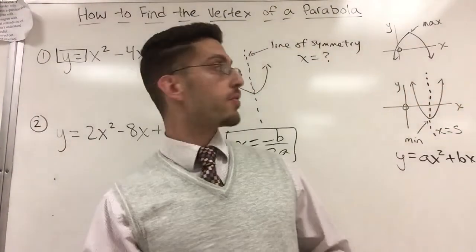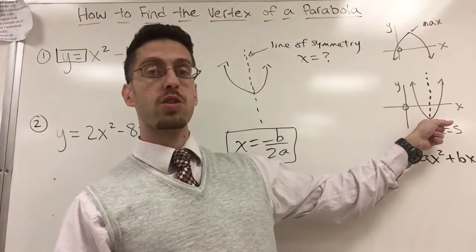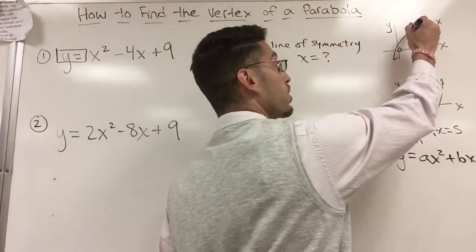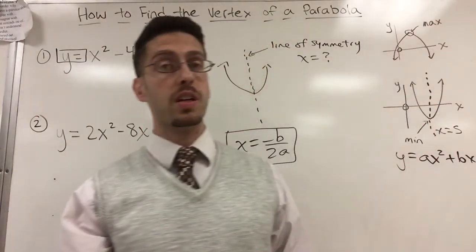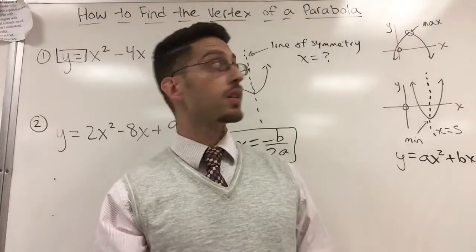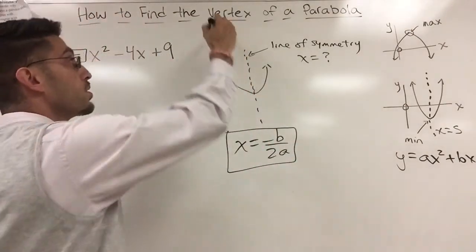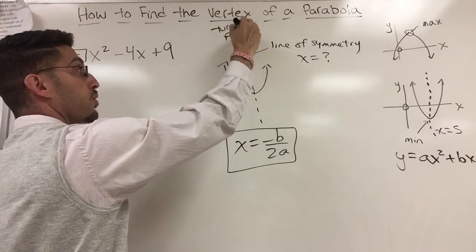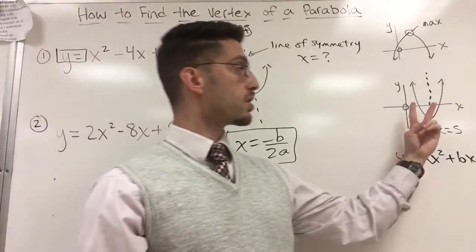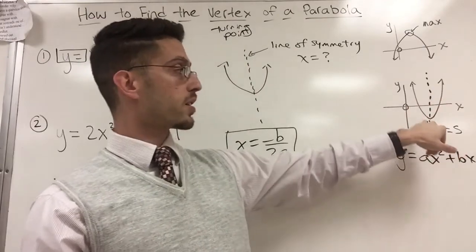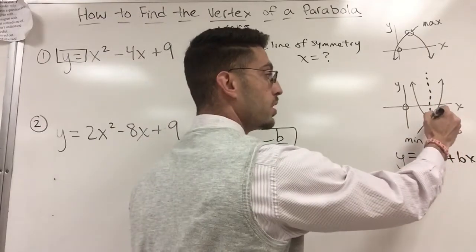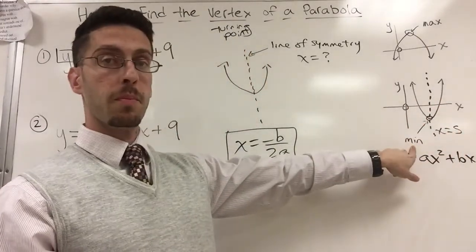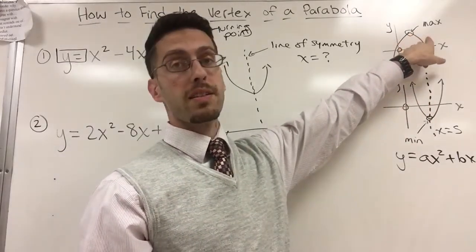But if I'm on a graph I might want to find the actual vertex. So this word that I'm using, vertex, is called a turning point. So this turning point of a parabola. If the parabola is u-shape then the vertex is on the bottom here and it's called a minimum. If the vertex is on top it's called the maximum.